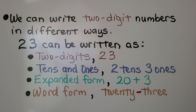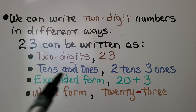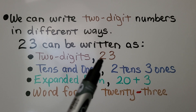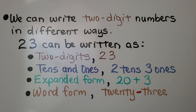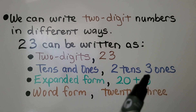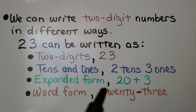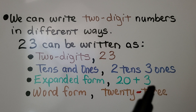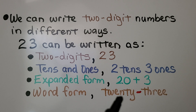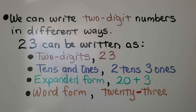We can write two-digit numbers in different ways. 23 can be written as two digits, a 2 and a 3 for 23. We can write it as tens and ones — two tens and three ones. We can write it in expanded form: 20 plus 3, or word form: twenty-three. Notice there's a hyphen there.